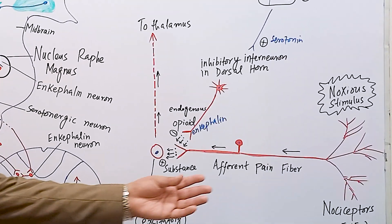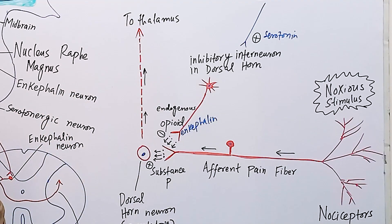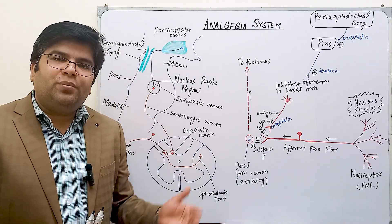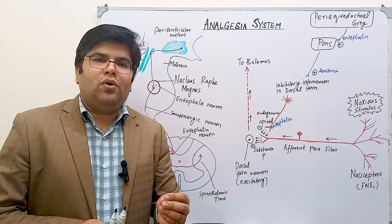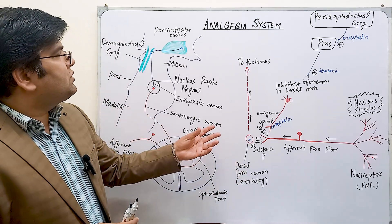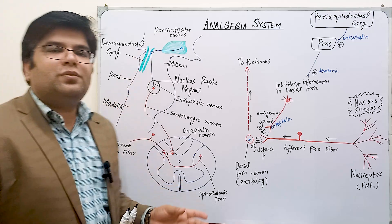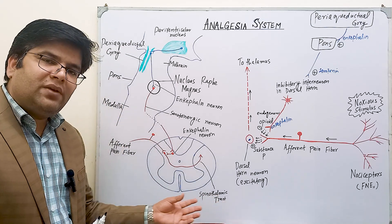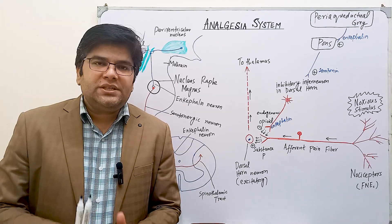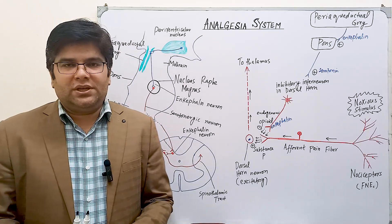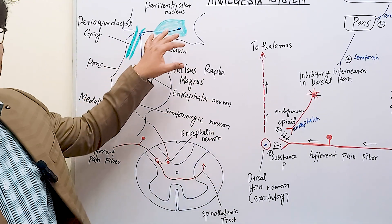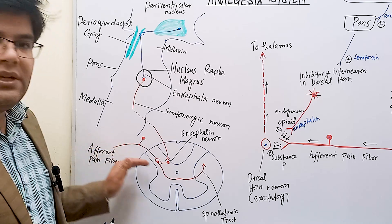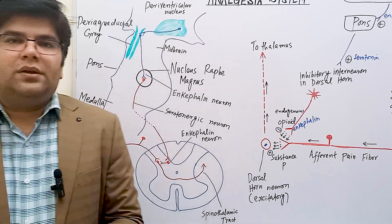In our somatosensory pathways, signals travel not only upwards but there is also centrifugal control for all somatosensory signals — for touch, proprioception, and similarly for pain. Very important centrifugal signals are sent from higher centers of the brain downwards towards the spinal cord to control pain signals entering from the periphery. The analgesia system is made by centrifugal signals coming from higher centers like the hypothalamus and brain stem downwards to the spinal cord, controlling pain entry signals at the level of the spinal cord.